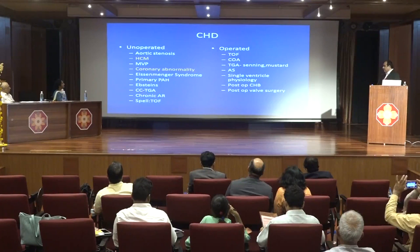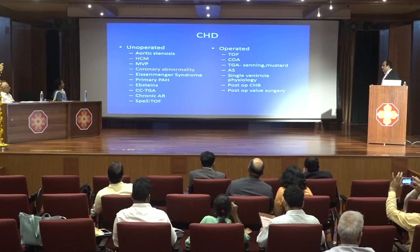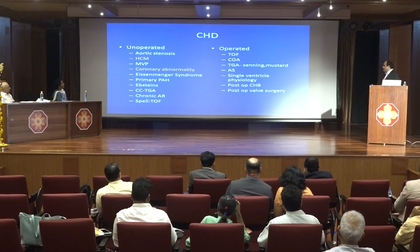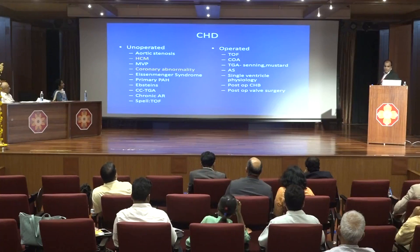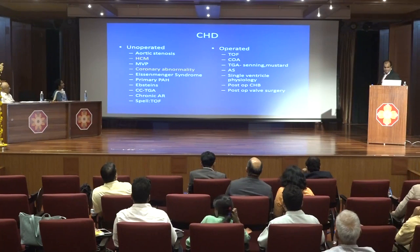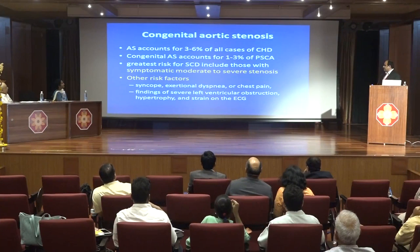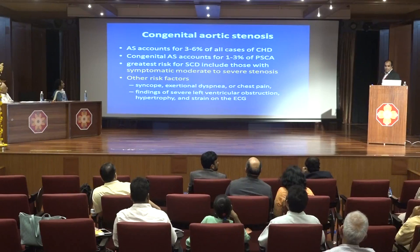Other unoperated causes include CC-TGA due to complete heart block or chronic AR. For operated patients, the four important causes are operated TOF, coarctation of the aorta, TGA after Senning or Mustard procedure, and aortic stenosis. Aortic stenosis accounts for 3 to 6% of all cases of CHD, with a 1 to 3% incidence of pediatric sudden cardiac death.